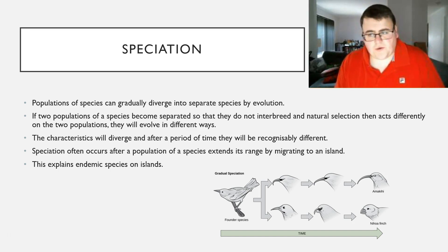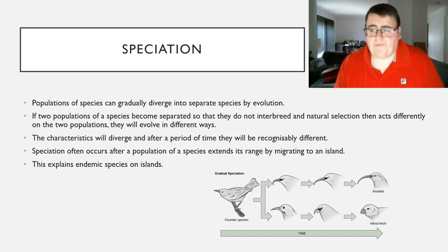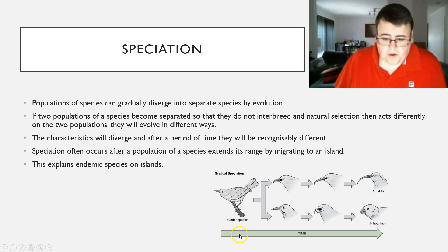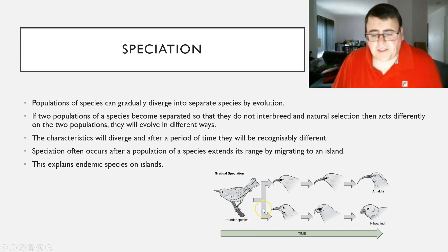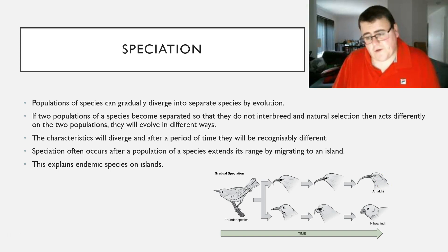Speciation is going to link very closely to last week when we were talking about temporal isolation, geographical isolation, things like that. Speciation ties very closely to that. Speciation is basically, as we can see in the picture below, when one species — the founder species — over time, populations of that species get separated for various reasons, evolve independently over time, until they get to the point where they become two very different species that can no longer sexually reproduce and create fertile offspring.